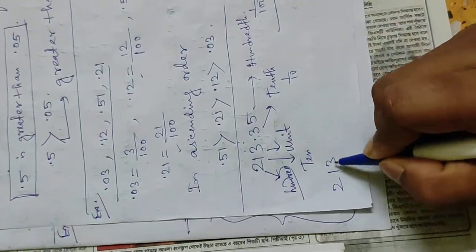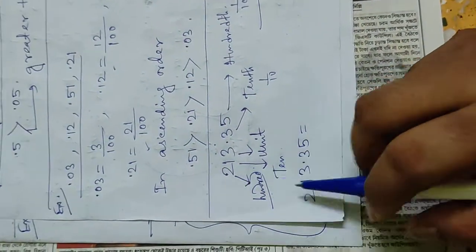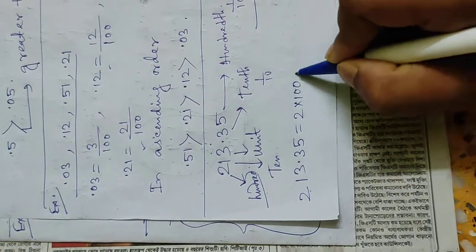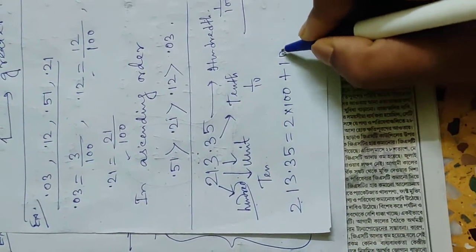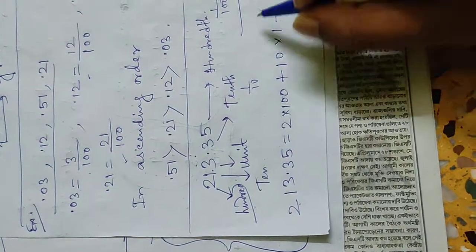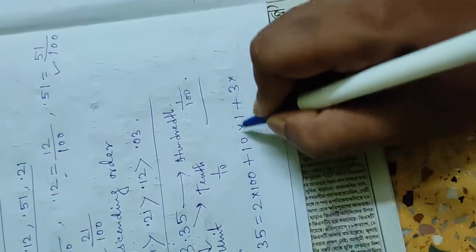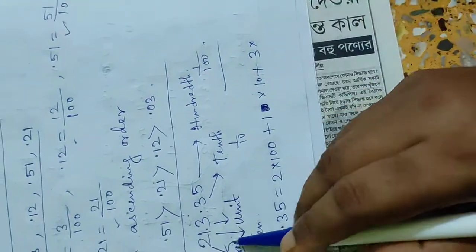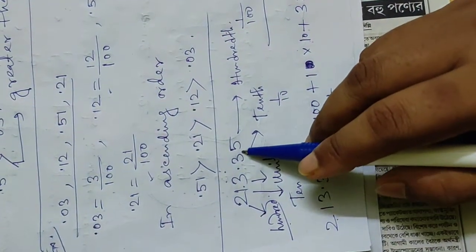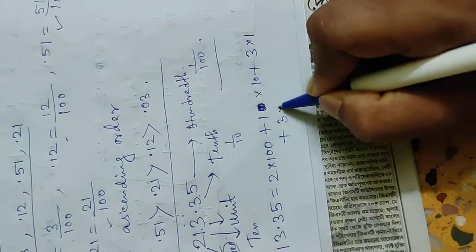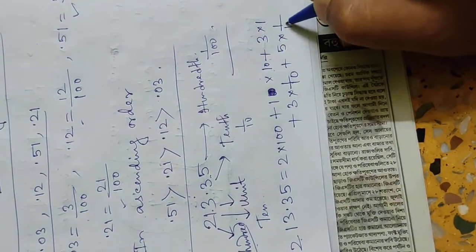So we can write 213.35 equals to: the 2 is in the 100th position, so 2 into 100, plus 1 in the 10th position, so 1 into 10, plus 3 in the unit position, so 3 into 1, plus after the decimal point 3 is in the 10th position, that is 3 into 1 by 10, plus 5 is in the 100th position, so 5 into 1 by 100.